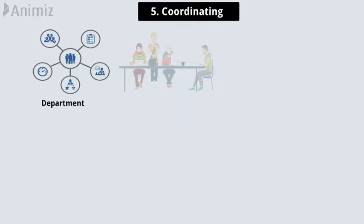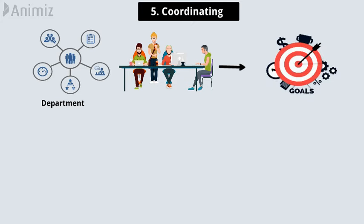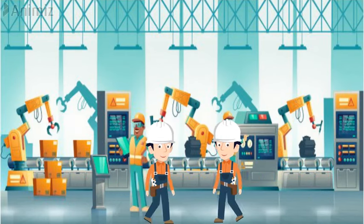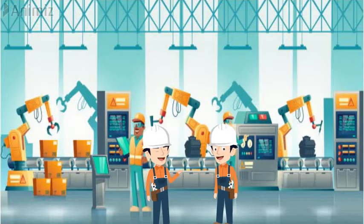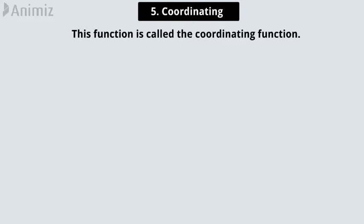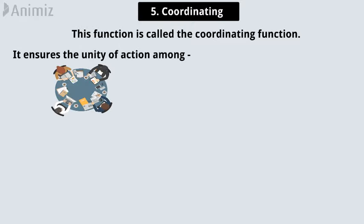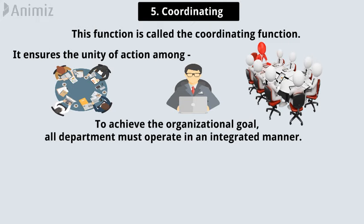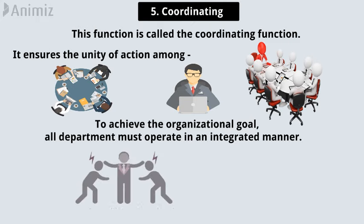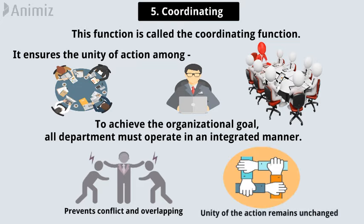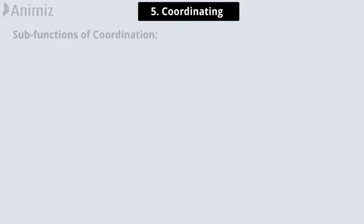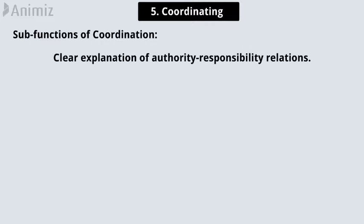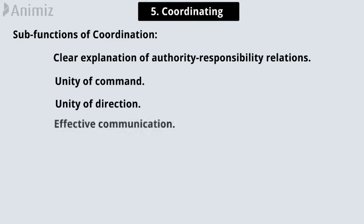Number 5 is Coordinating. In every organization, various departments perform different types of activity to reach organizational goals. It is important that the activities of different departments and work groups are harmonized — this function is called the coordinating function. It ensures the unity of action among work groups, individuals and departments. To achieve the organizational goal, all departments must operate in an integrated manner. Coordinating prevents conflict and overlapping so that the unity of action remains unchanged. Sub-functions of coordination are clear explanation of authority-responsibility relations, unity of command, unity of direction, and effective communication.